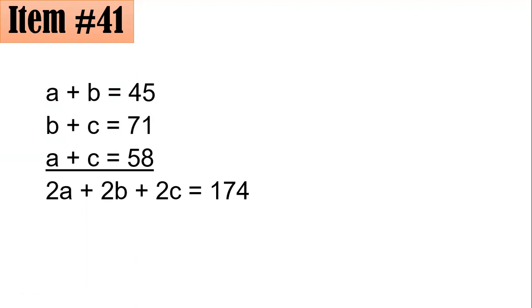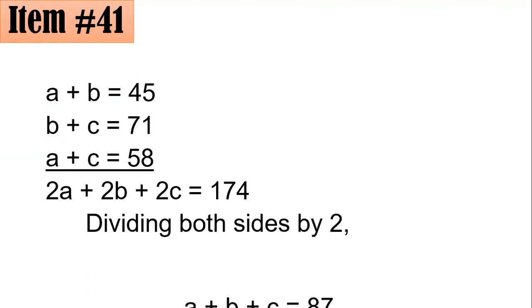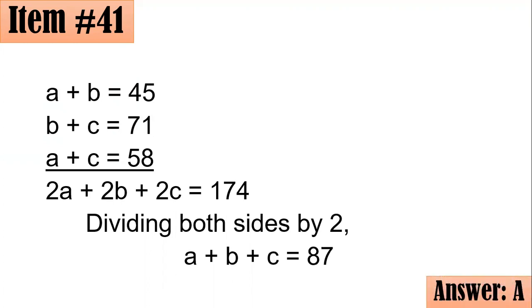Dividing both sides by 2, you get A plus B plus C, which is 87. So even without knowing the actual values, the sum is 87. Letter A.